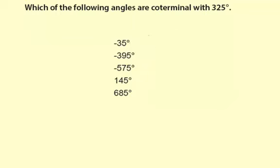So let's just go down the list here. Now negative 35 degrees plus 360 degrees equals 325 degrees. So that means negative 35 degrees is coterminal with the 325 degrees.